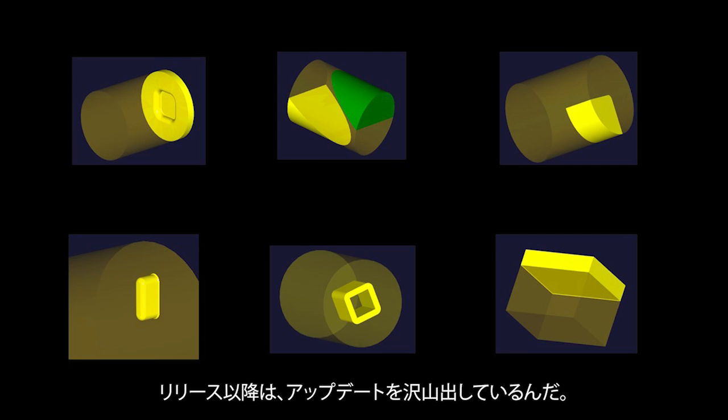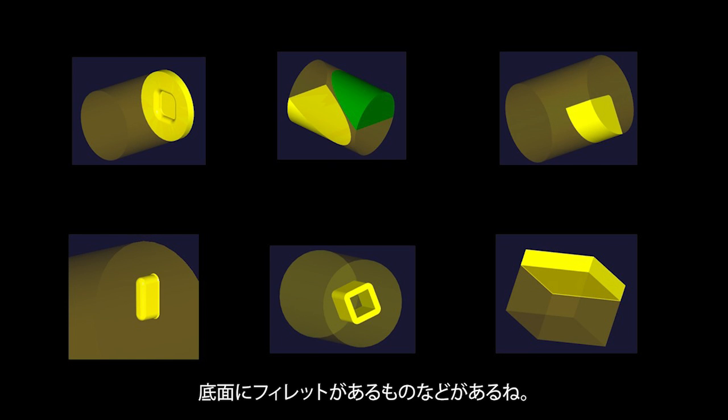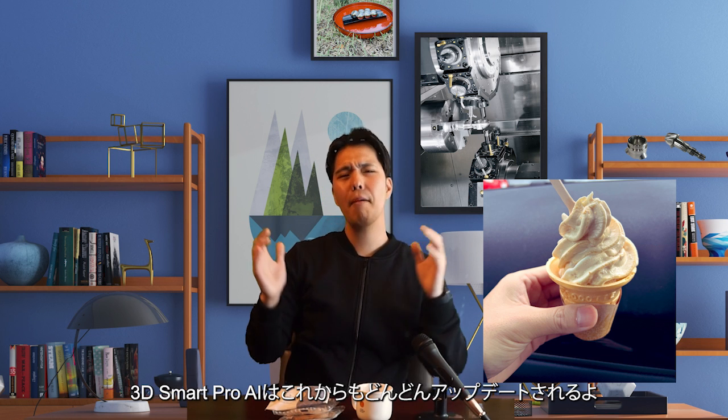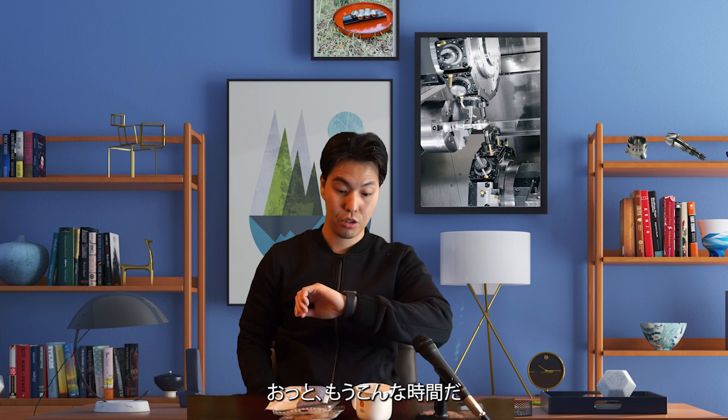Since April, we've been able to do shapes like this. We have many updates — there's a fillet on the bottom, for example. More and more shapes are being created. I think the development team needs some bean cake soft-service ice cream because they use their brainpower a lot. More updates to the 3D Smart Pro AI are on the way.